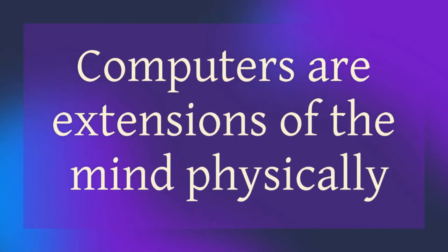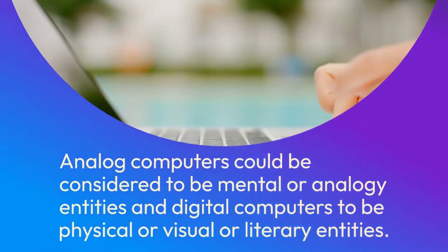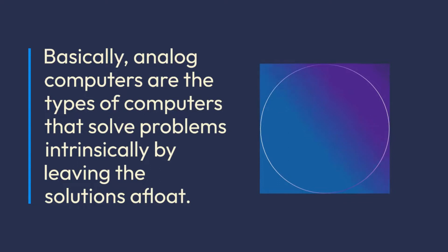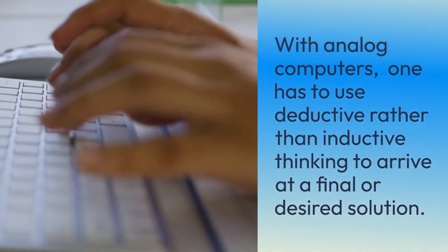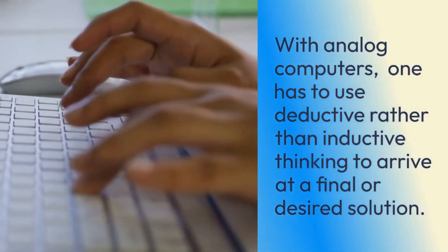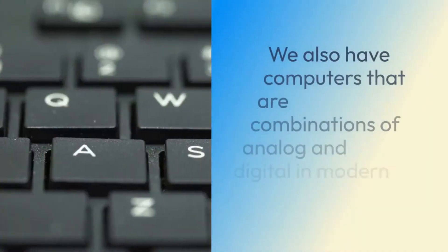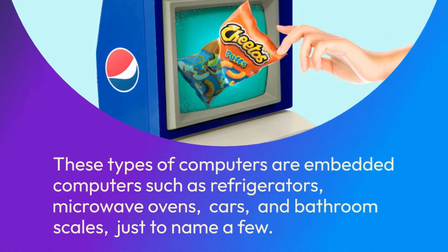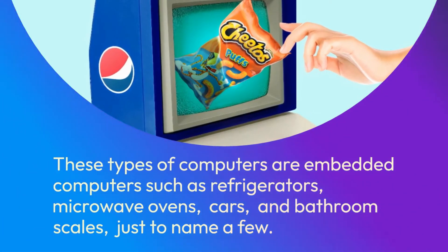Computers are extensions of the mind physically and mentally. Analog computers could be considered to be mental or analogy entities, and digital computers to be physical, visual, or literary entities. Basically, analog computers are the types of computers that solve problems intrinsically by leaving the solutions afloat. With analog computers, one has to use deductive rather than inductive thinking to arrive at a final or desired solution. In contrast, digital computers give one the actual solution or direct answer. We also have computers that are combinations of analog and digital in modern society — embedded computers such as refrigerators, microwave ovens, cars, and bathroom scales, just to name a few.